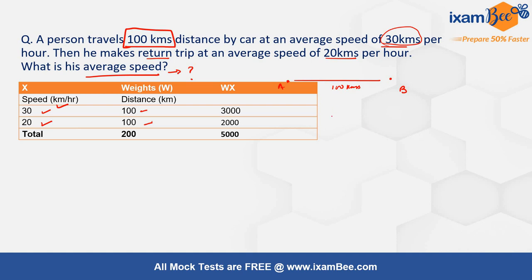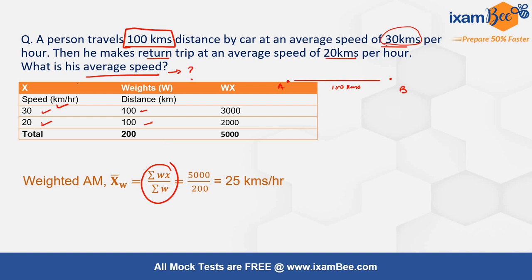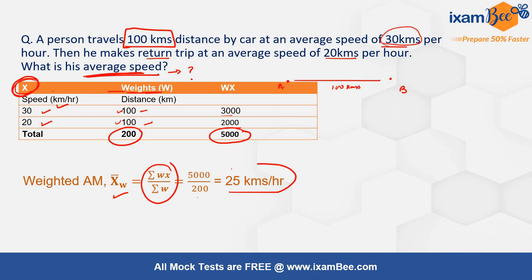A good guess would be to use the weighted arithmetic mean, whose formula is: sum of (weight × variable) divided by sum of weights. Here the weights are 100 km each, giving w×x values of 3000 and 2000, summing to 5000. Dividing by total weight of 200 gives 5000/200 = 25 km/h. But is this the correct approach? There is actually a major issue with what we just did.